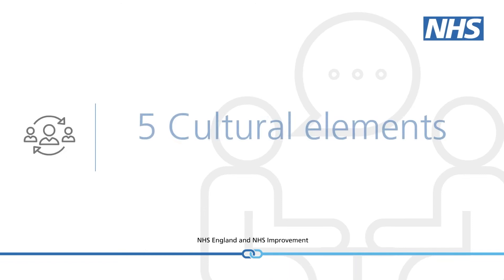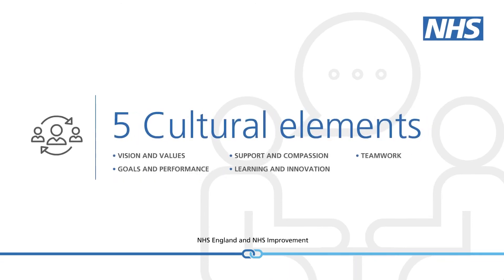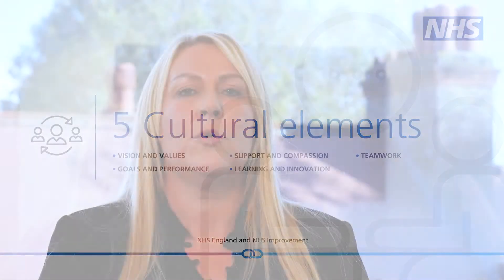The Culture and Leadership Programme Phase 1 tools look at your organisation through five cultural elements at all levels. The survey will tell you about the leadership strengths of your staff and your organisation as a whole. This tool consists of two online behaviour surveys: one for staff in your organisation and the other for those in partner organisations, for example health and social care organisations that you routinely work with.